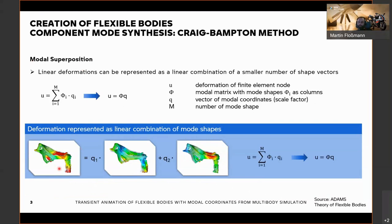Let's take a look at the structure. You have a motorcycle mainframe here that is deforming in some way, and with colors you see the deformation. Instead of calculating the deformation on every finite element node — the displacement U — we make a modal superposition. The deformation is the same as a weighting factor times one mode shape plus a second weighting factor times another mode shape. Together, we get the same deformation again. The deformation of finite element nodes is the sum of mode shapes times the weighting factor, and these weighting factors are the so-called modal coordinates.